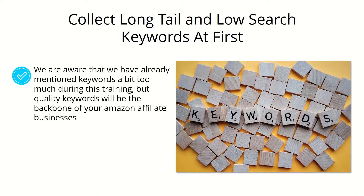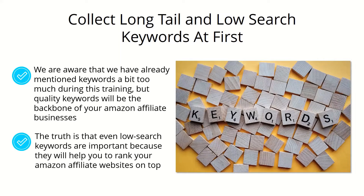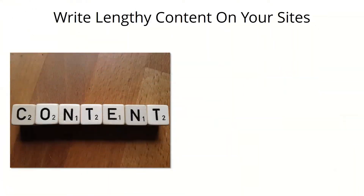Collect long-tail and low-search keywords. Quality keywords will be the backbone of your Amazon affiliate businesses. Sometimes it will be easier to find your niche by finding keywords first, and sometimes you will find your keywords by deciding a niche first. Even low-search keywords are important because they will help you rank your Amazon affiliate websites on top. Do your keyword research on Google and look for niche sites on the third, fourth, and fifth pages of results, and collect all the keywords they're targeting.